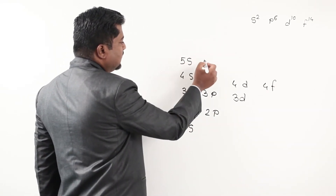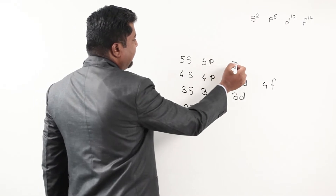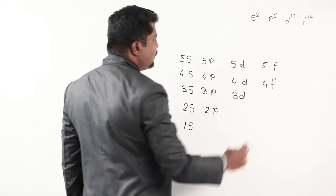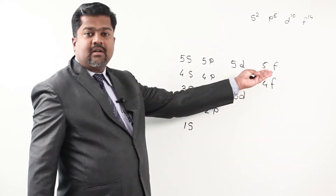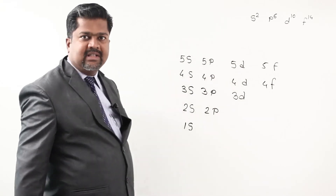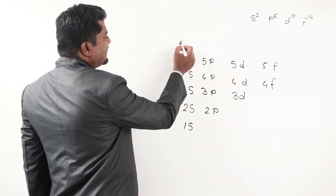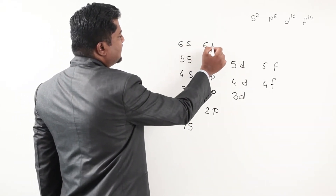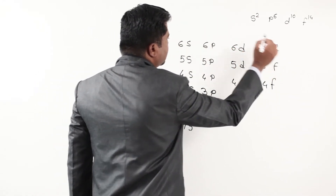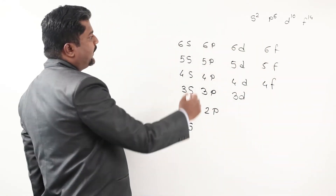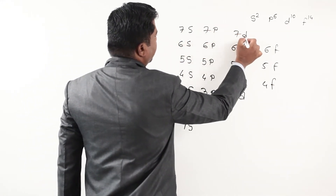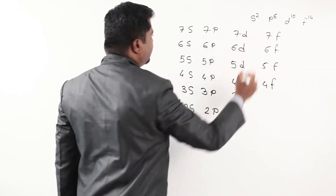Continuing the chart: 5s, 5p, 5d, 5f. Then 6s, 6p, 6d, 6f. Then 7s. We could continue 8, 9, 10 and so on infinitely, but practically this chart is sufficient. The naturally occurring elements in the periodic table go up to atomic number 92 — uranium is the last naturally occurring element — so I am writing the chart up to that point.